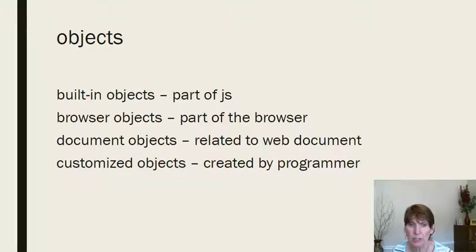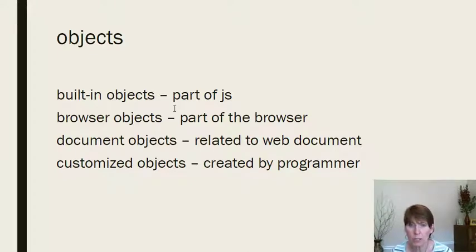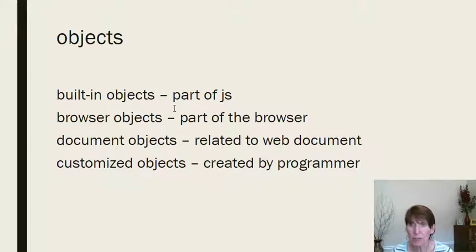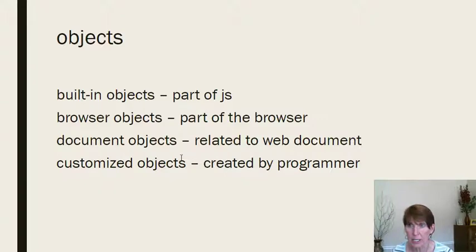One of the basic components of JavaScript is objects, and we're going to be using objects a lot. There are a few categories of objects. There are built-in objects that are part of the JavaScript language. There are browser objects, which actually belong to the browser. There are document objects, which belong to a web page — the document is the web page itself. And then there are customized objects that the programmer can create and use.